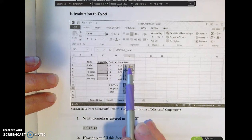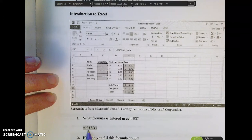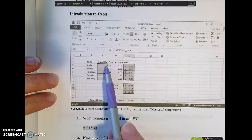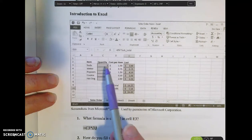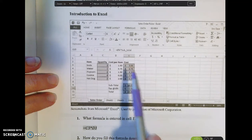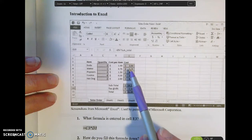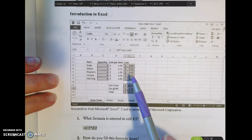So the formula for E3 is the equal sign C3 times D3, and that will take whatever quantity you put in cell C3 and multiply it by D3. So if you change these values then your cost will automatically be changed. How do I fill this formula down? I could go through and type this formula which would be C4 times D4 and C5 times D5, but it can get a little tedious if you have a very long problem.